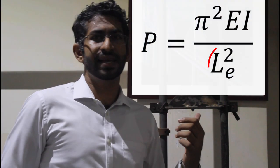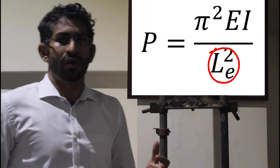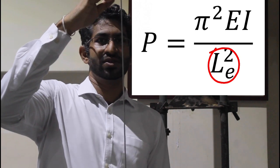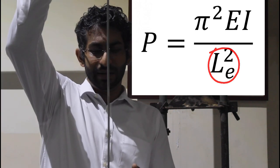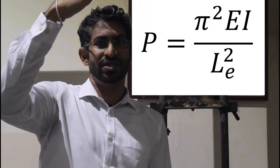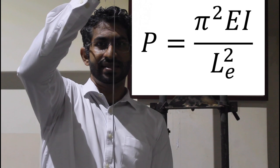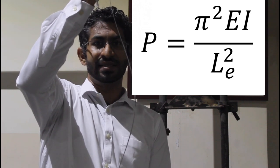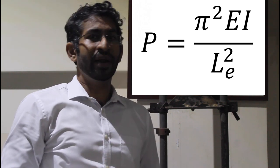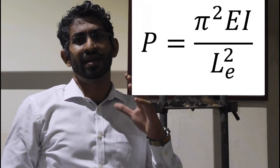Then the other parameter is LE. LE is the effective length of the column. So if the end conditions are pinned — simply held like this — it will buckle to a certain shape and will buckle easily. And if the end conditions are fixed like this, it will buckle to a different shape. Therefore buckling will depend on its end condition. Depending on the end condition, we introduce a new parameter called effective length.